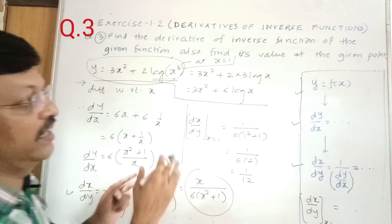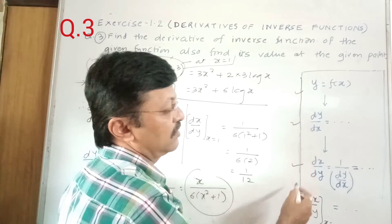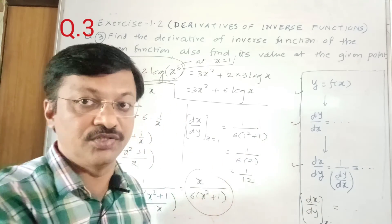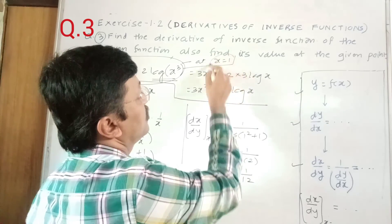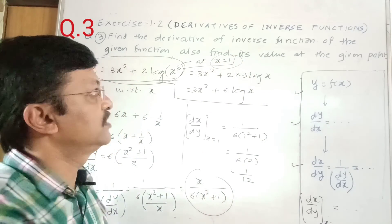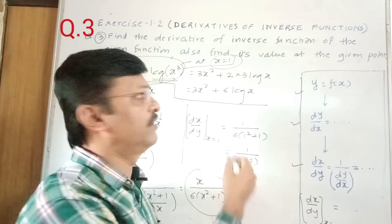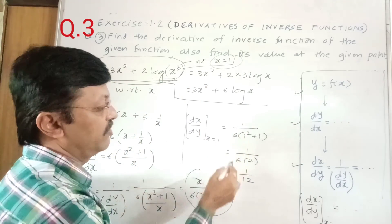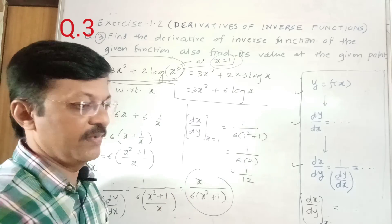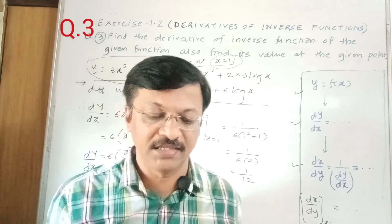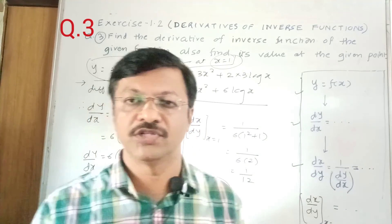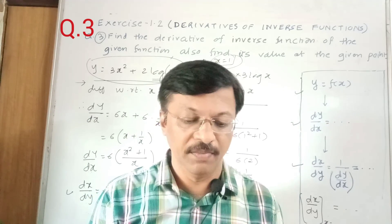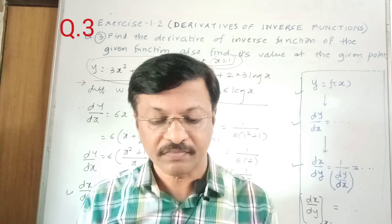In this manner you can practice examples from questions 1, 2, and 3 in exercise 1.2. The extra step in question 3 is substituting the given value — sometimes x = 0, sometimes x = 2, whatever value they give, just substitute it in place of x in the last step. Remaining examples will be discussed in the next lecture.